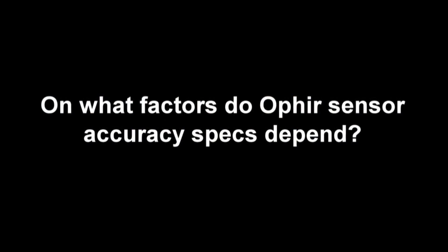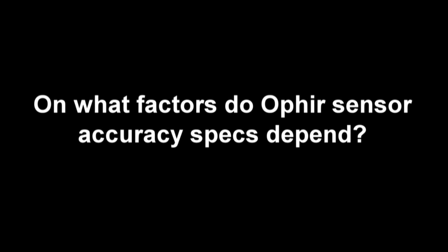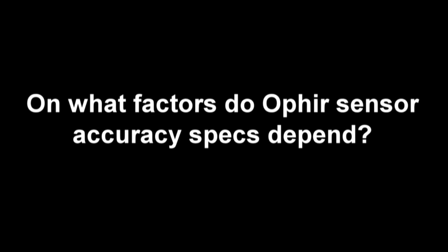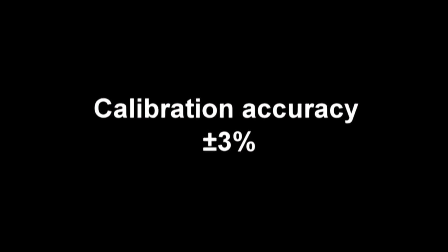The subject of this tutorial is on what factors do Ophir sensor accuracy specs depend. We state in our catalog that the calibration accuracy is plus or minus 3%. Now what does this mean?